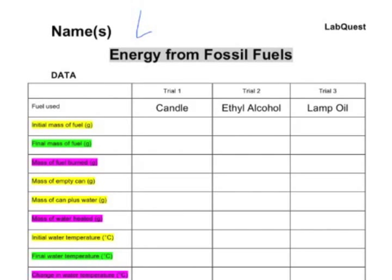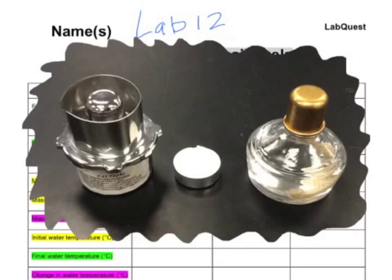Hello, this is Mr. Buss, and today I'm going to walk you through how to do Lab 12, Energy from Fossil Fuels. Although this lab is titled Energy from Fossil Fuels, what we're really going to be testing today is comparing alcohol versus candle wax versus paraffin lamp oil.